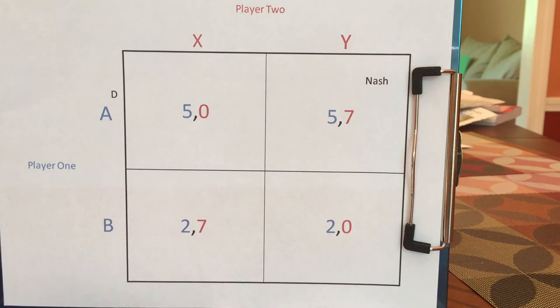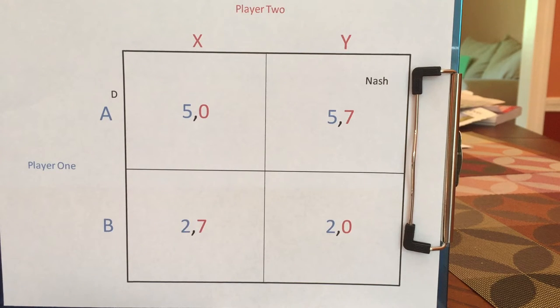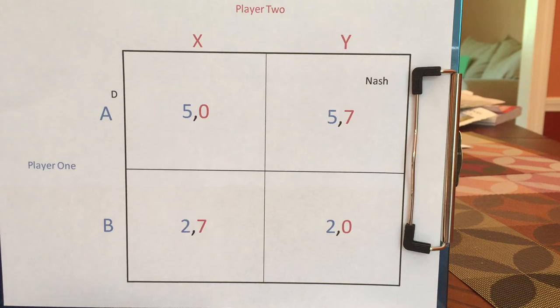Let's see why AY is a Nash Equilibrium. Player one isn't going to regret playing A — how could they? It gives a higher payoff than B no matter what.